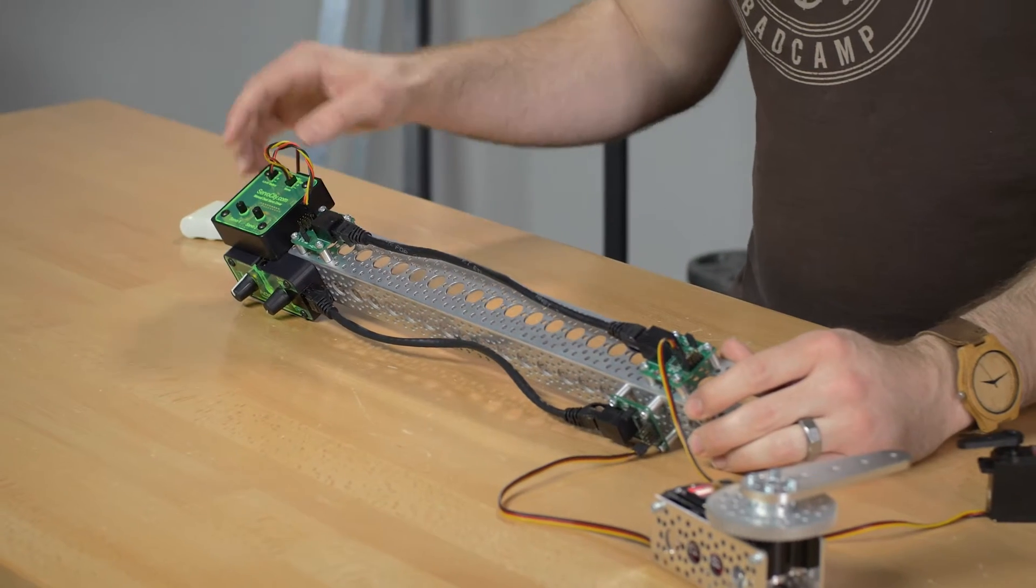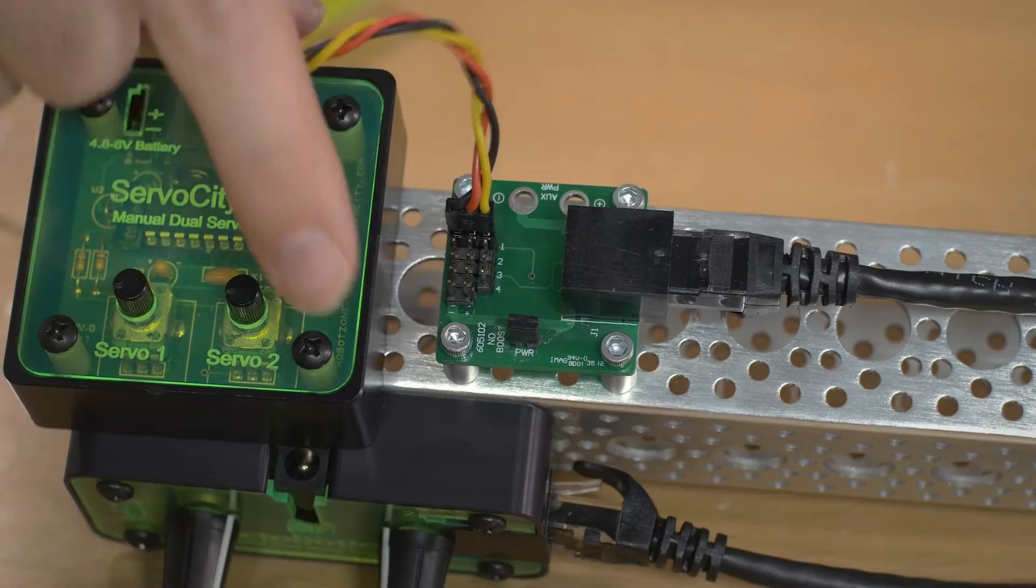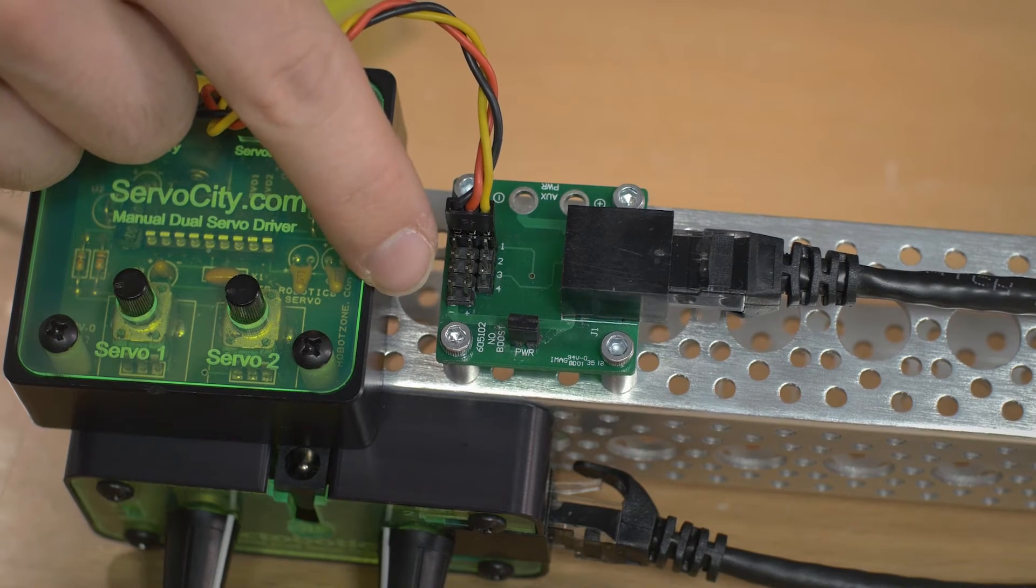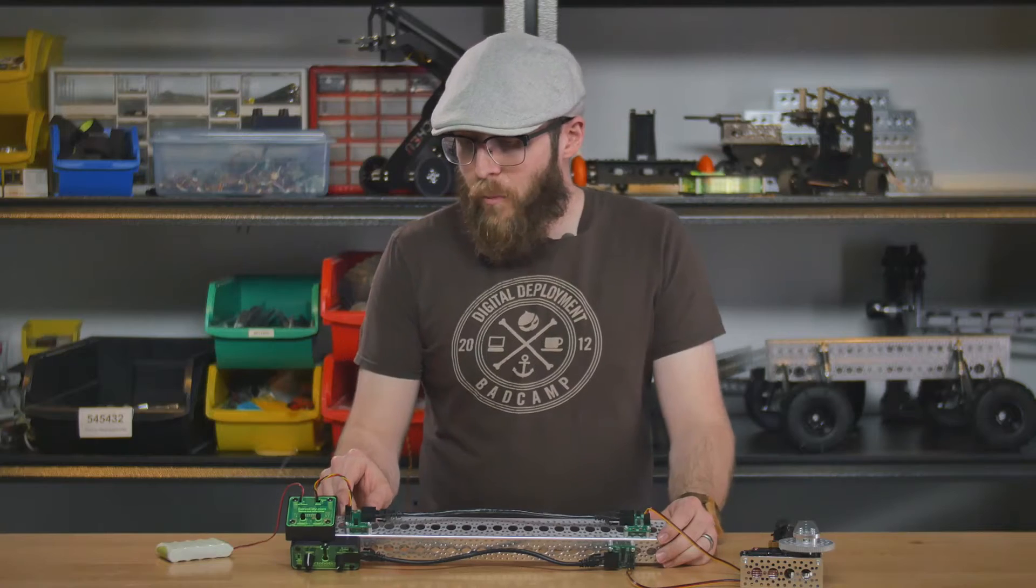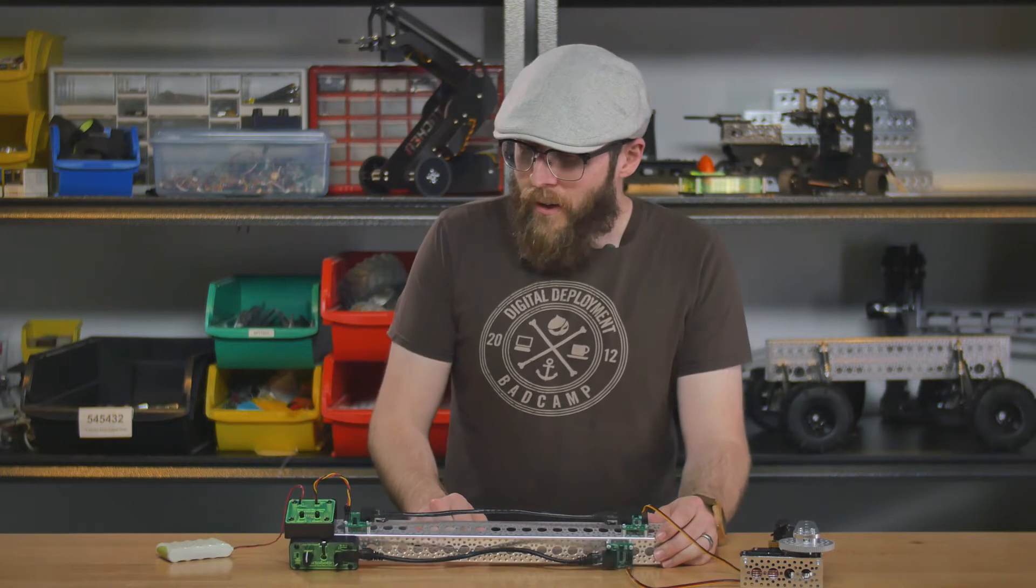And so since this first model of servo controller does not have CAT6 as an output we're using this non-boosted board to basically act as a breakout board to get that signal into the CAT6 cable.